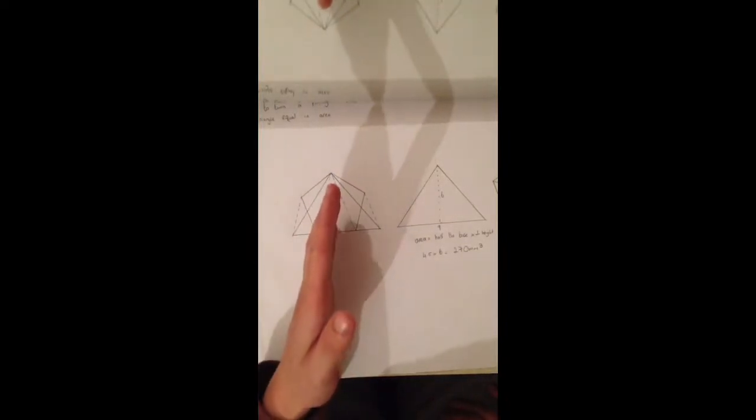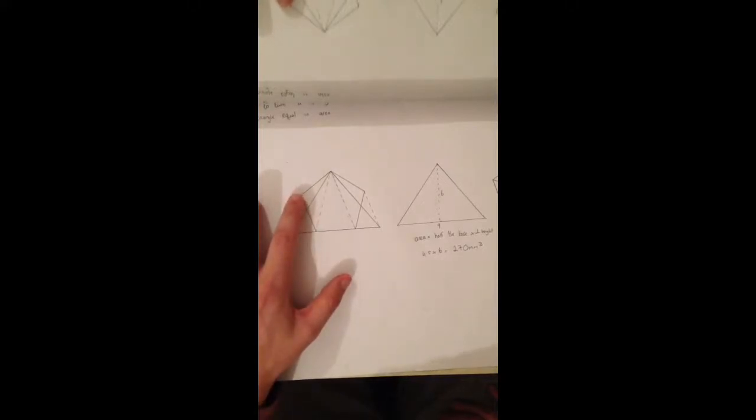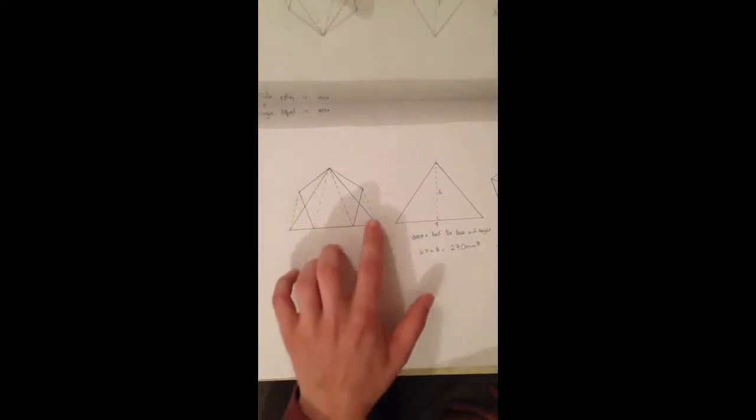Then what you have to do is bring those lines out to this point here and connect them at the same angle and that will give us the two corner points of our triangle.